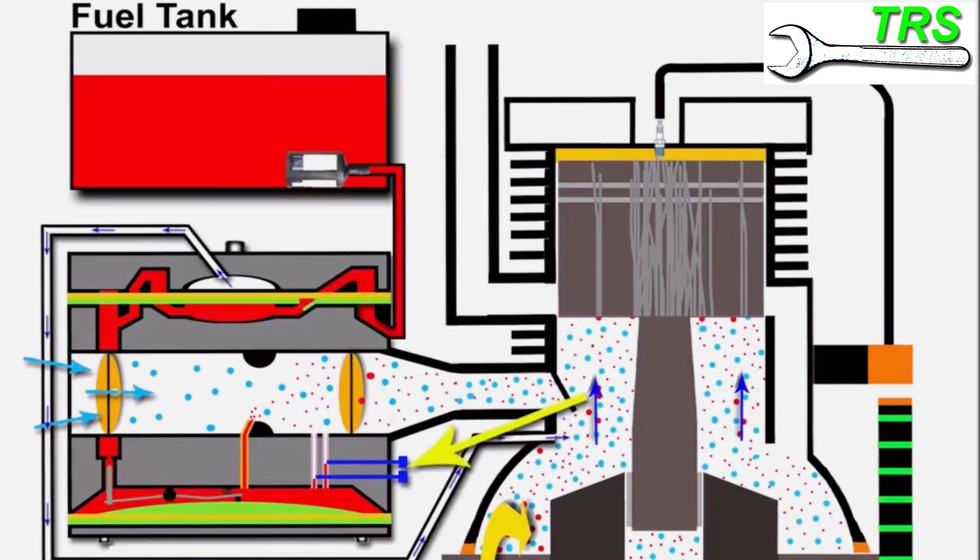Moving on now to a much more common cause of lean running, and that is incorrectly set mixture screws, the tuning screws on the carburetor. The main jet here supplies the bulk of the fuel for the engine. These areas here provide a smaller but more precisely measured amount of fuel. This measured amount of fuel can be adjusted by the operator by turning each of these screws.